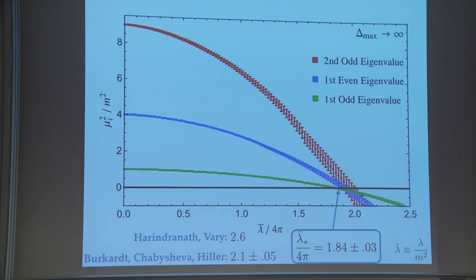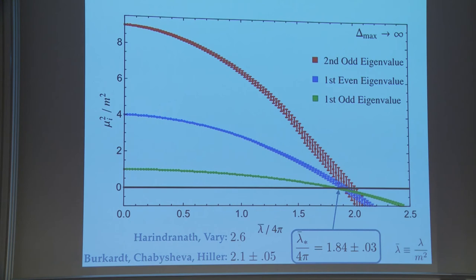Since Hamiltonian truncation is just a variational method, the lowest eigenvalue always places an upper bound on the lowest energy. So any time my data crosses zero, that places an upper bound on the critical coupling, which always moves to the left as delta max increases. Without extrapolating, at delta max of 34 — roughly 12,000 basis states — we can place an upper bound on the critical coupling in light cone quantization of 1.98.